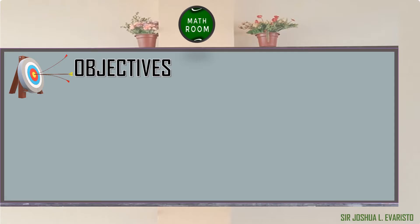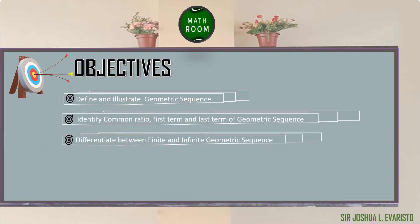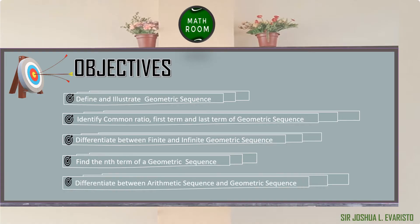You should be able to define and illustrate geometric sequence, identify common ratio, first term, and last term of a geometric sequence, differentiate between finite and infinite geometric sequence, find the nth term of a geometric sequence, and differentiate between arithmetic sequence and geometric sequence. Let's get started.